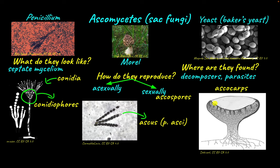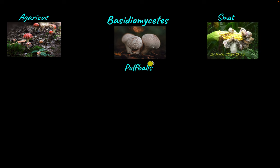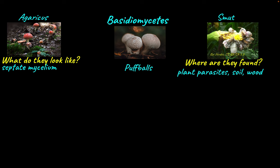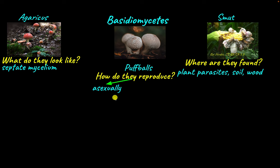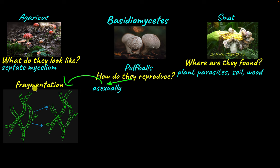The next phylum is Basidiomycetes. Examples include Agaricus (mushrooms), puff balls, and smut. Basidiomycetes also have a septate mycelium like Ascomycetes and they are plant parasites — smut and rust are examples. Some also grow in moist places like soil and decaying wood. Basidiomycetes can reproduce asexually but not through the formation of spores; asexual reproduction is through fragmentation, where one hypha splits into many pieces and each forms a new fungal network.